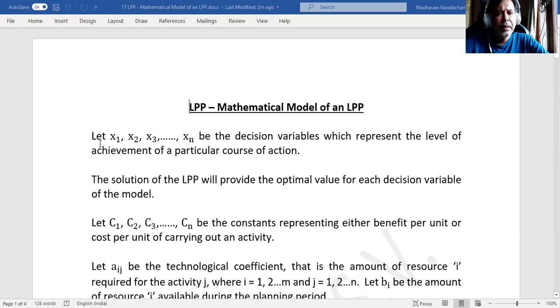Let x1, x2, and so on up to xn be the decision variables which represent the level of achievement of a particular course of action. The solution of the linear programming problem means once we solve, we will be getting the values of these x1 to xn that will provide the optimal value of each decision variable of the model.